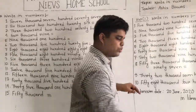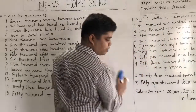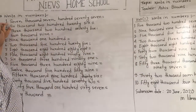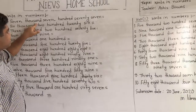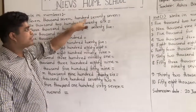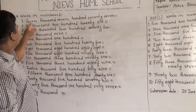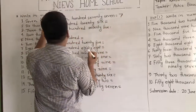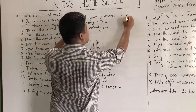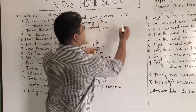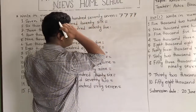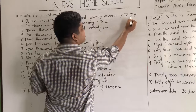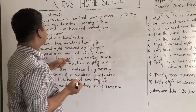Now we shall go to our today's topic. Our first number is 7,777. So at first we write 7,000, then 77. We read this number as 7,777. Our first one is done.